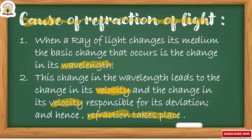When a ray of light changes its medium, the basic change that occurs is the change in wavelength. First, wavelength changes, and this change in wavelength leads to a change in velocity. When wavelength changes, velocity also changes. Due to the change in velocity, the ray deviates — and hence refraction takes place.